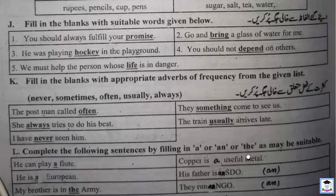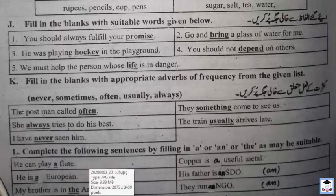Exercise I: Complete the following sentences by filling in 'a', 'an', or 'the' as may be suitable. He can play a flute. Copper is a useful metal. He is a European. His father is an SDO. My brother is in the army. They run an NGO. He is a European Union member.